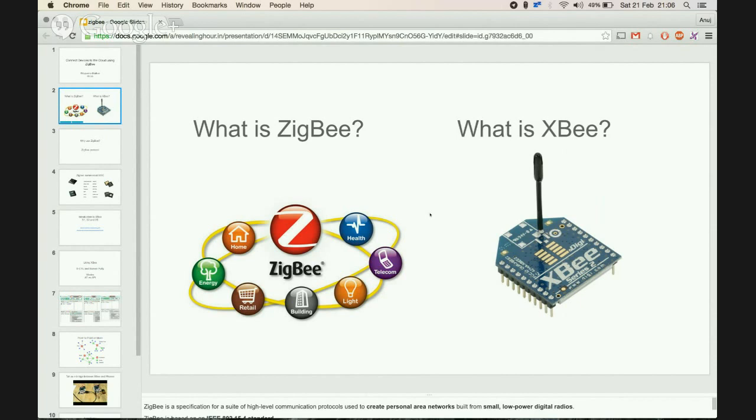ZigBee is typically used in low data rate applications that require long battery life and a secure network. It was conceived in 1998 and standardized in 2003, and thus the ZigBee Alliance was formed.